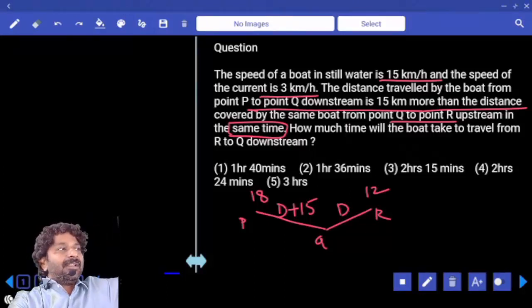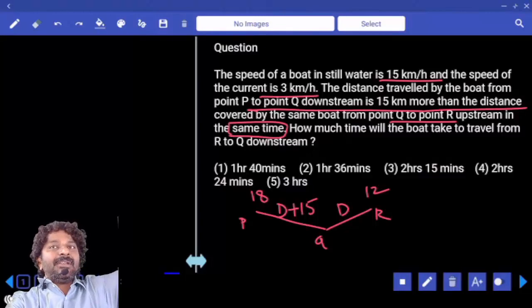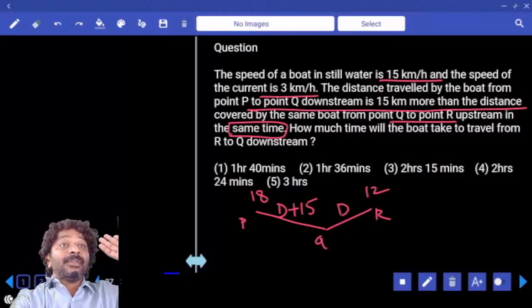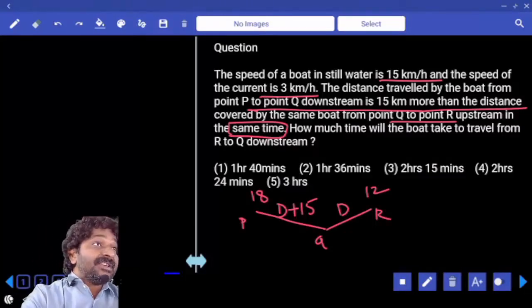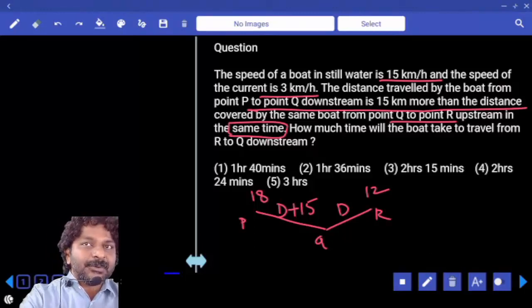Downstream speed is 18, upstream speed is 12. Ratio? If the speed ratio is 3 to 2, distance ratio also must be 3 to 2.